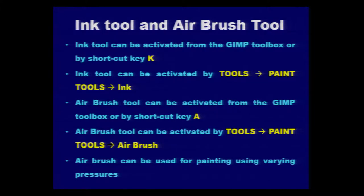One more tool we are going to cover in this session: the ink tool and airbrush tool. The ink tool can be activated from the GIMP toolbox or by using the shortcut key capital K. It can also be activated from the tools menu under the paint tools options. The airbrush tool can be activated from the GIMP toolbox — the icon is available there — or you can use the shortcut key capital A.